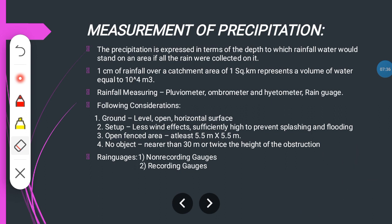There are two types of rain gauges: non-recording rain gauges and recording rain gauges. Non-recording rain gauges are non-automatic, while recording rain gauges are automatic.